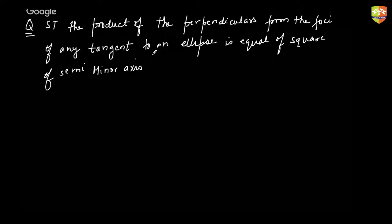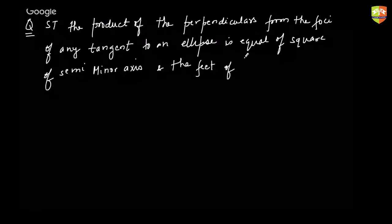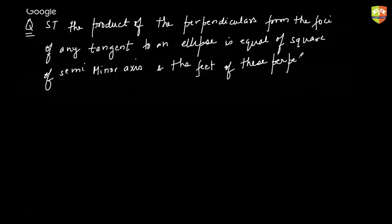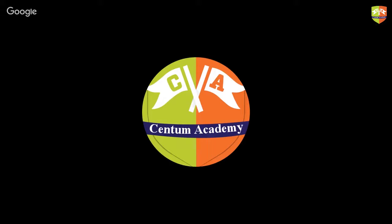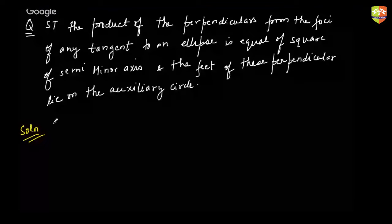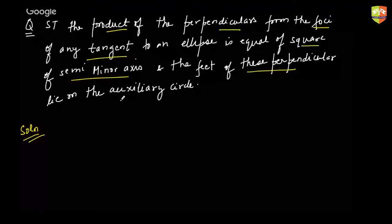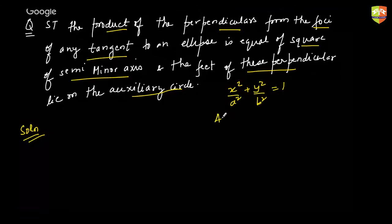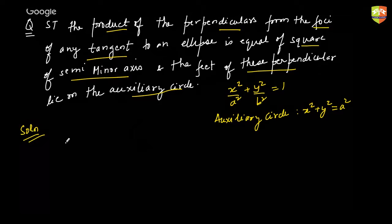Additionally, the feet of these perpendiculars lie on the auxiliary circle. This should be remembered as a theorem — it's very important. For a standard ellipse, the auxiliary circle is x² + y² = a², which is the circle drawn with the major axis as diameter, as discussed while covering the eccentric angle form.